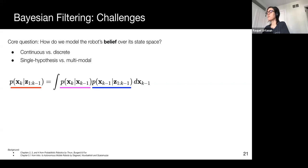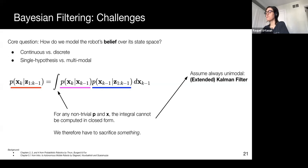For example, we can assume that the distribution is unimodal, both transitions are linear, and both the noise of the beliefs are Gaussian. This results in a Kalman filter.